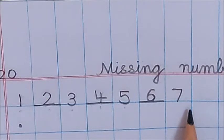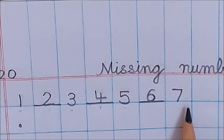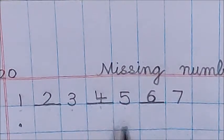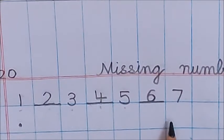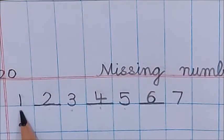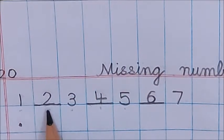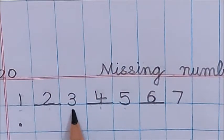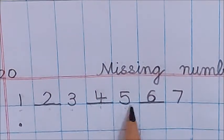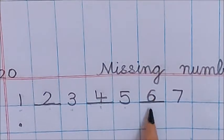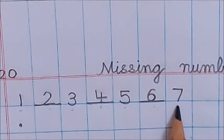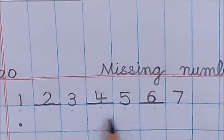Children, make it a habit that after writing all the missing numbers you check your work. Let us count: one, two, three, four, five, six, seven. It is complete.